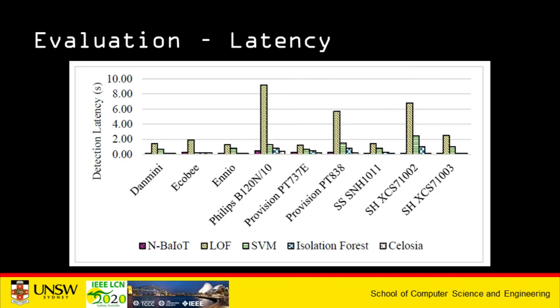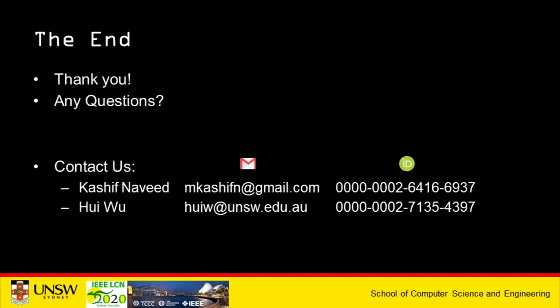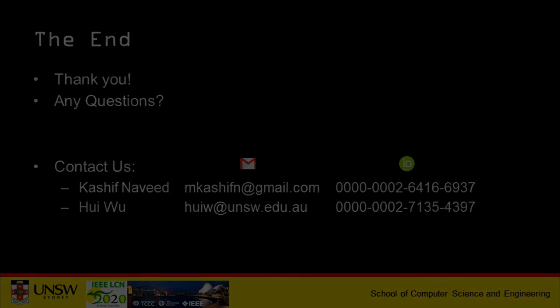Latency is also an important factor when it comes to botnet detection. A low-latency system means we can detect botnets in real time. In this slide I am presenting a relative comparison of our proposed framework with other state-of-the-art techniques, and as you can see, we provide the lowest detection latency compared to all available techniques. That's the end of my presentation — thank you for joining my session. If you have any questions, please feel free to reach out to me or my supervisor.